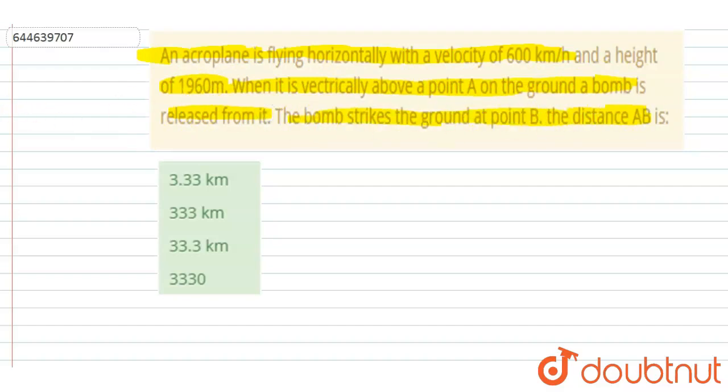You have to find out the distance AB. When the bomb is released from the airplane, it will have the same velocity as the plane, which is 600 kilometers per hour.